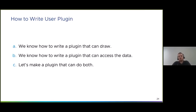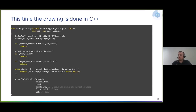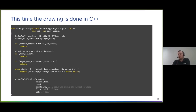We now know how to draw from a plugin and how to access data from a plugin — let's make a plugin that does both. For the drawing callback, I'll use C++ because the GUI itself is written in C++, making integration easier. In principle, this will also be available in C, though it's not fully functional yet. Let's understand what is going on inside the drawing callback function.